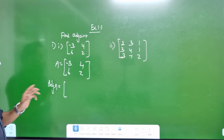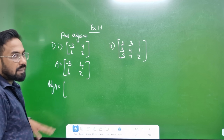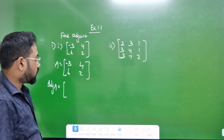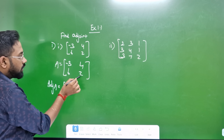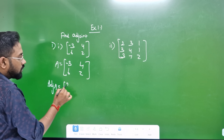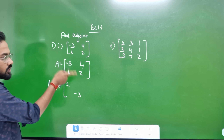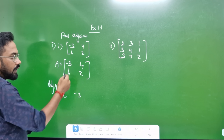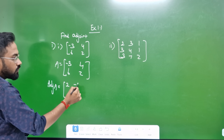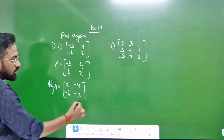Adjoint A — Adjoint of A. Then for matrix A, this diagonal is minus 3. Interchange the 2 diagonals: minus 4, minus 6, 3.